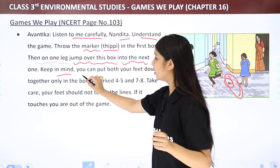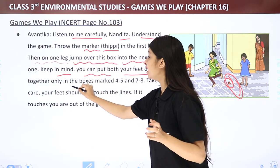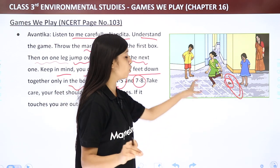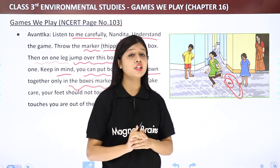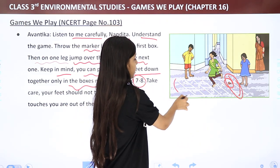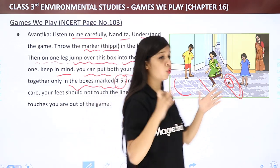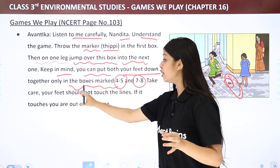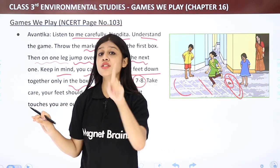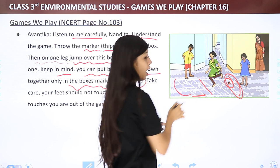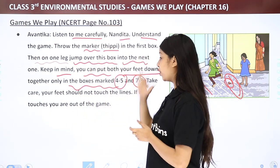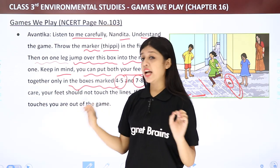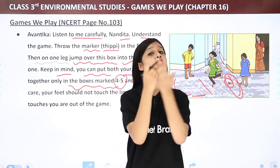You can put both feet down together only in the boxes marked 4-5 and 7-8, where two squares appear side by side. And take care — your feet must not touch the line. That is the most important rule: if your foot touches the line, you are out of the game.